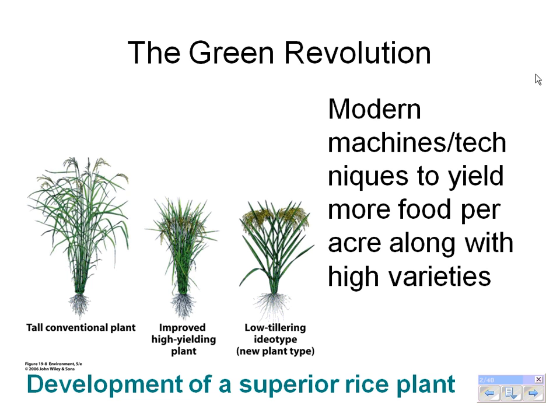The positives of the Green Revolution are that we now have more food per person, and developing countries are able to produce food for the people that live there. With an expanding population, this is helpful because we have more food and plants that are giving us higher yields. Some negatives are that modern machinery uses fossil fuels and contributes to air pollution.